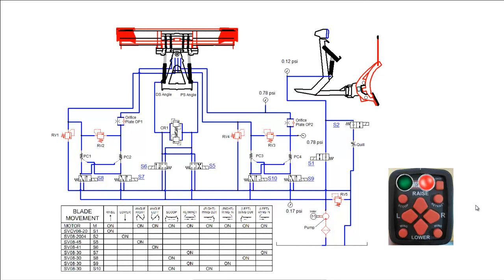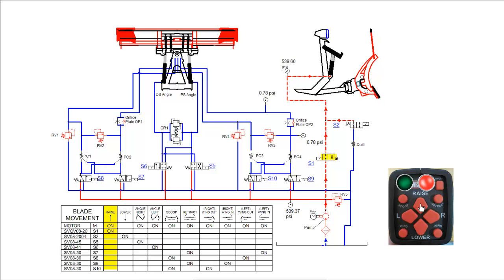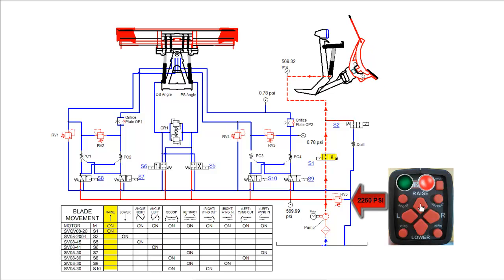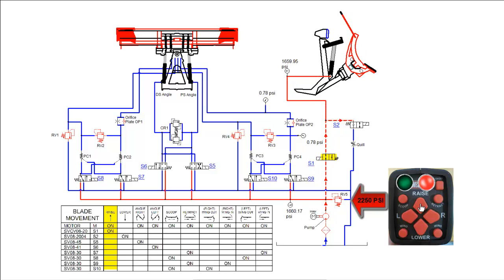We will now perform the raise function. We will begin by activating the raise button on the plow control. Hydraulic fluid from the tank will begin to flow through the pump, through the shifted S1 cartridge, and into the base of the lift ram, raising the plow. When the plow is fully raised, pressure will build to the relief setting of RV5, and then return to tank.